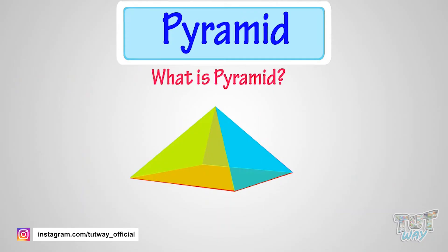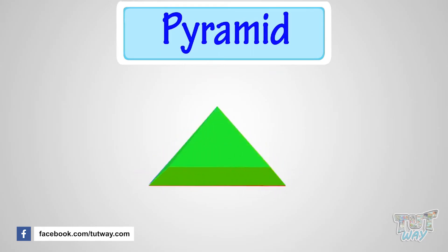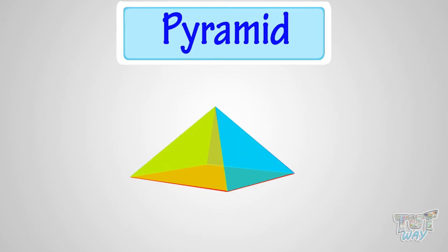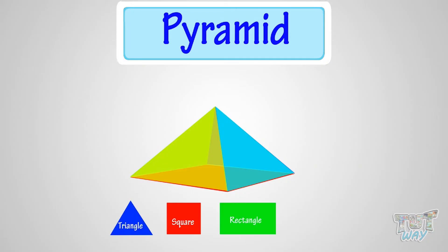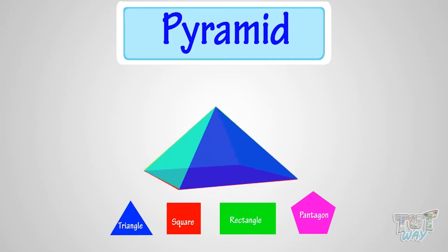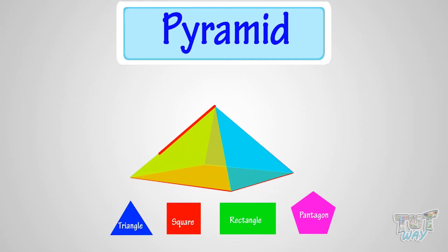In simplest words, a pyramid is a 3D shape where it has a single base, which can be of any polygon shape, like triangle, square, rectangle, or pentagon. And all other faces are triangle in shape, that converge to a single point at the top, which is called its apex.